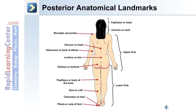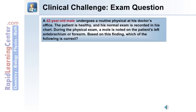The back of the elbow is the olecranon. The gluteus or buttock. The back of the knee is known as the popliteus. The sura or calf, and on the foot the calcaneus is known as the heel, and the sole of the foot is known as the planta.